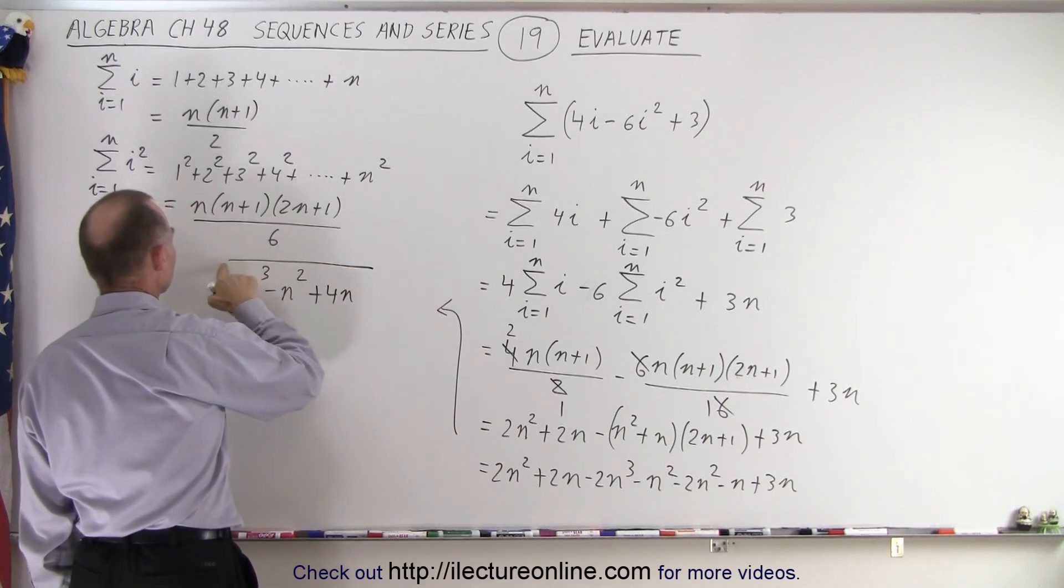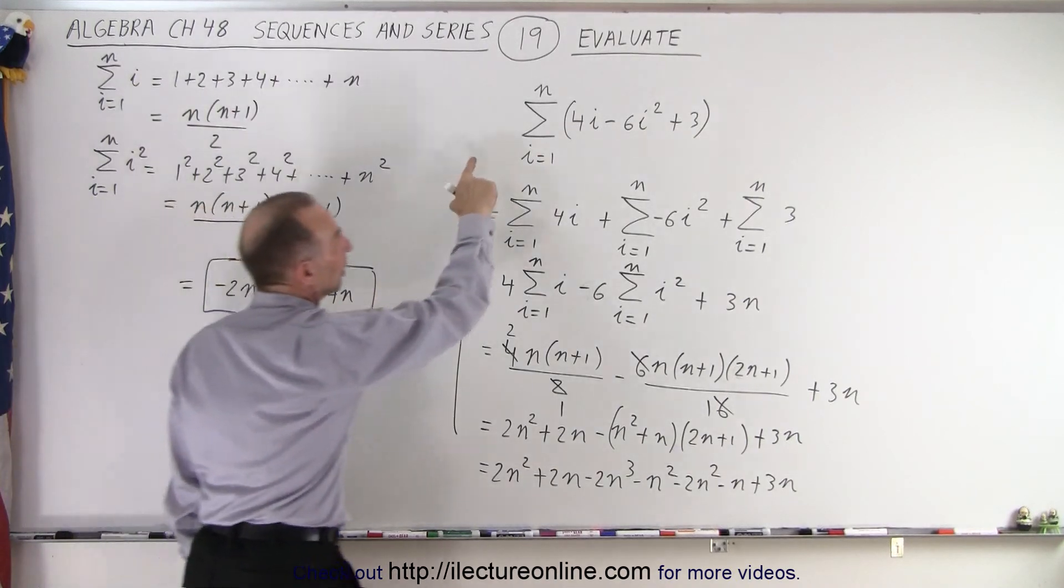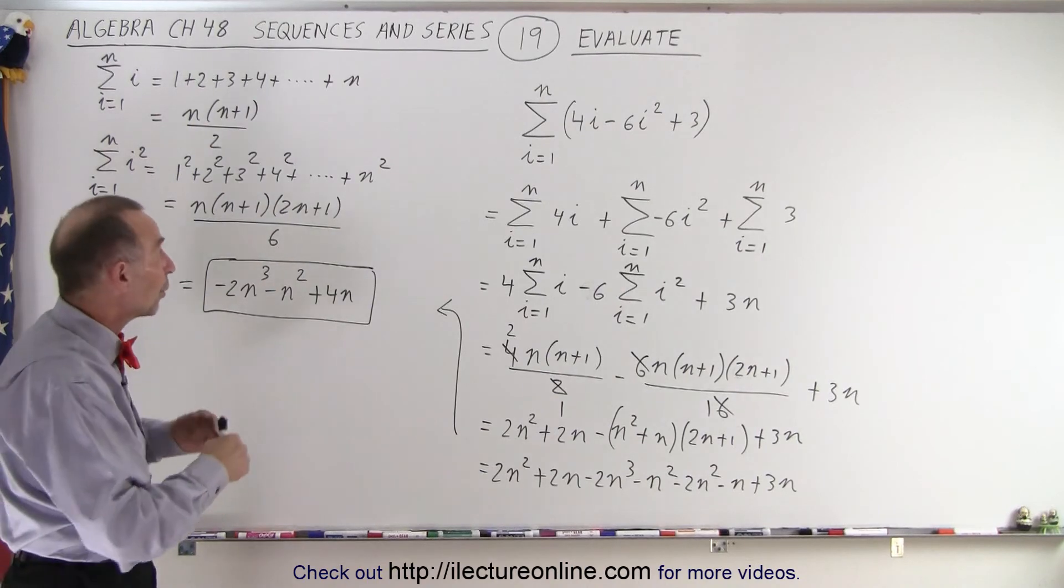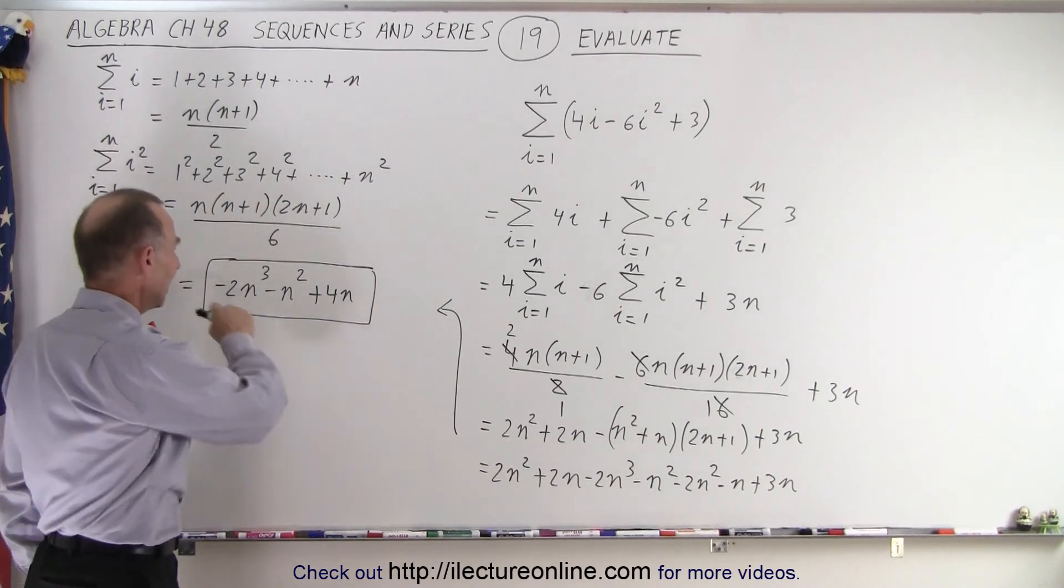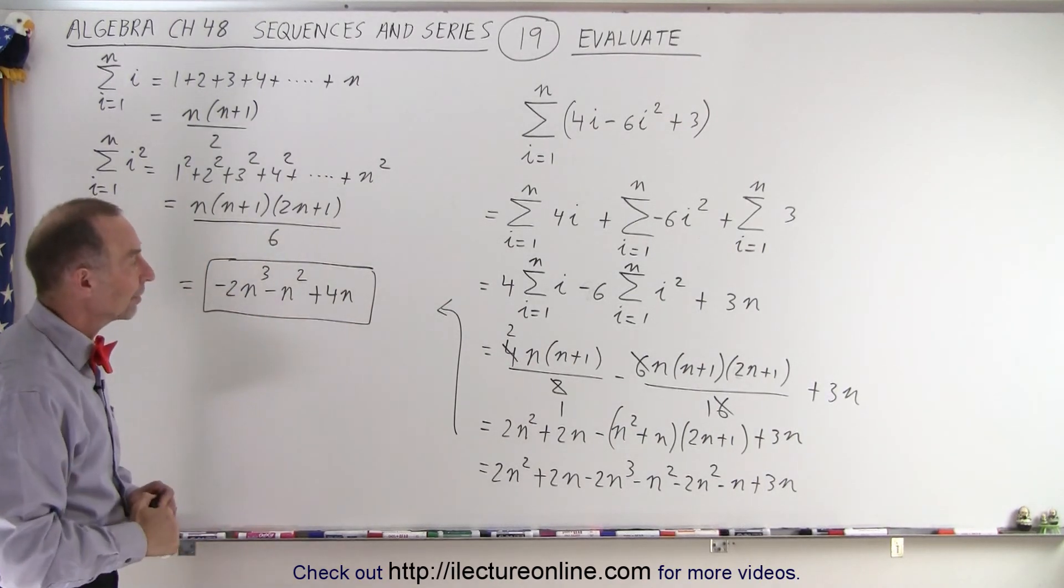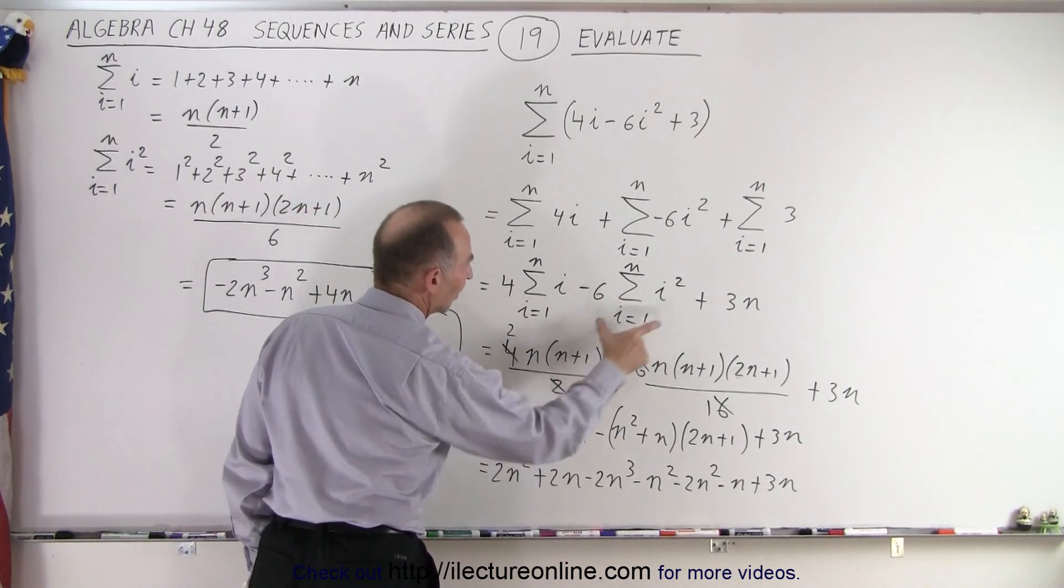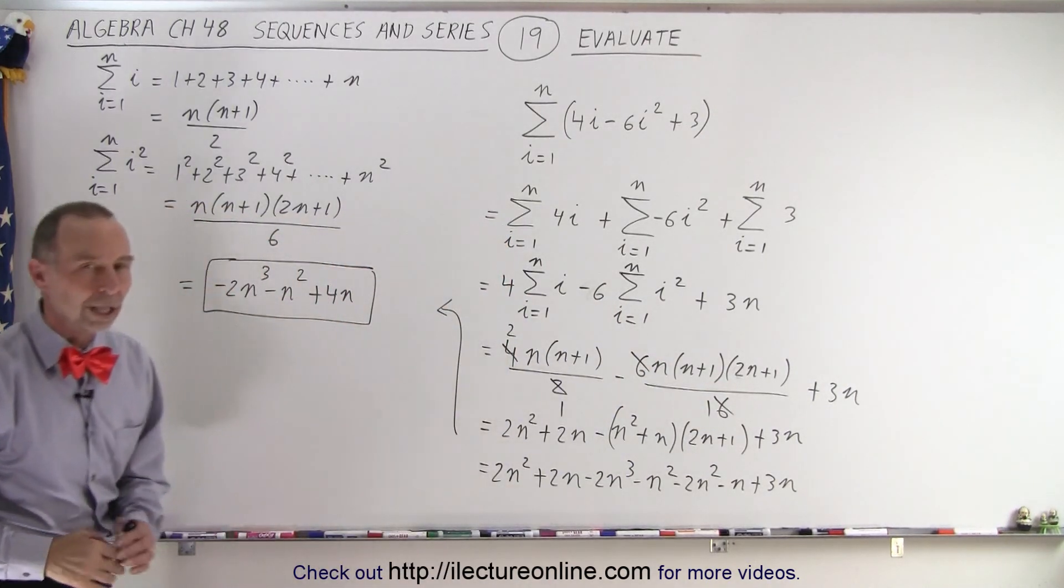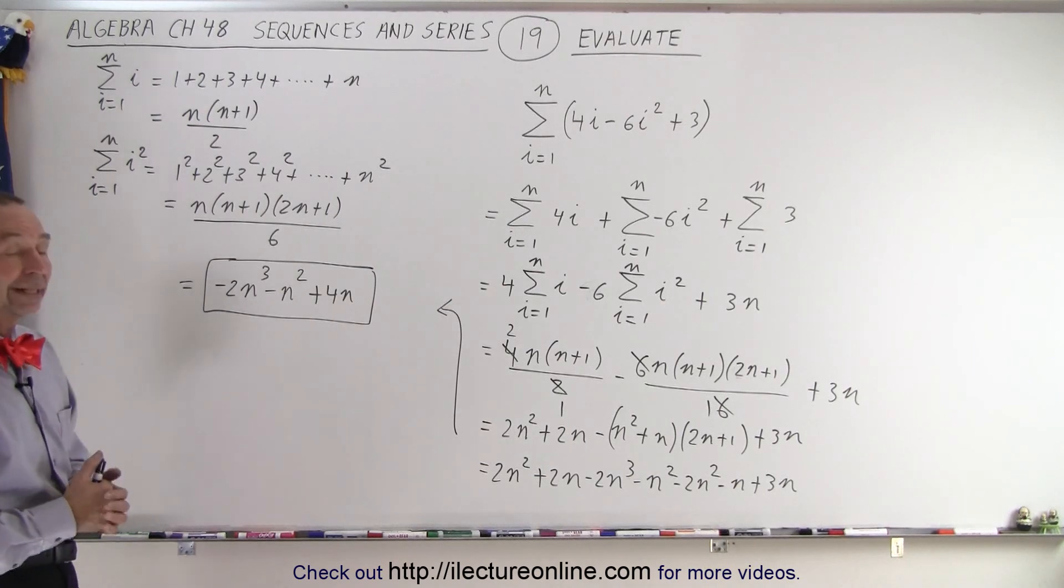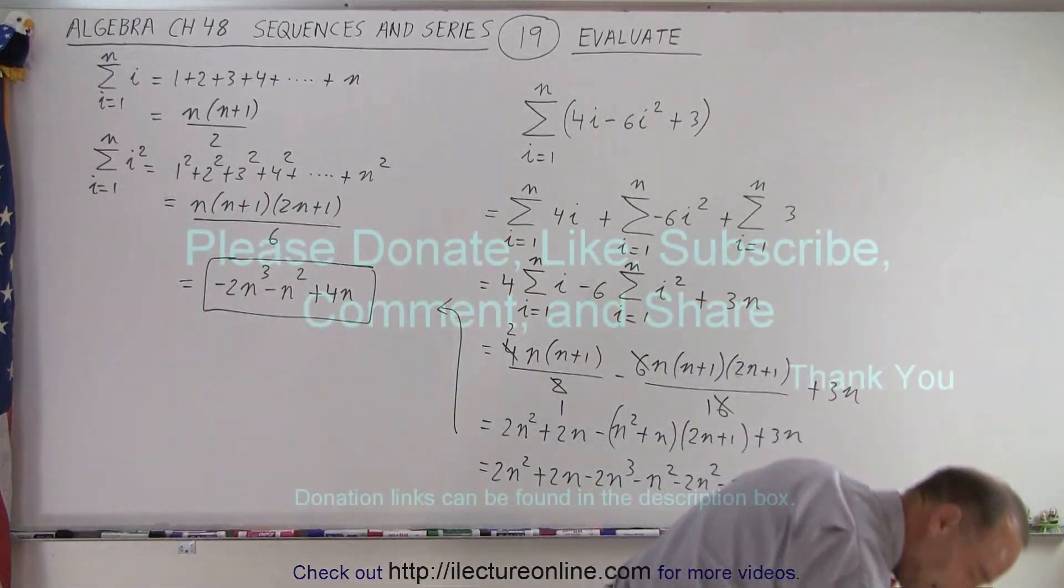And so this is the final result of this original expression from i equals 1 to n. So now you can say that no matter what the n values, plug in any value for n and this will give you that final result of adding all those terms together. But remember that once we had it in this form, this could easily be replaced by this and this could be replaced by that to make the whole job a whole lot easier. And that is how we do that. Pretty neat, huh?